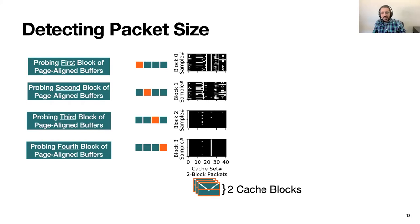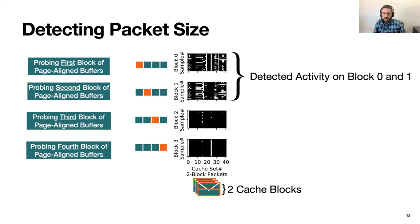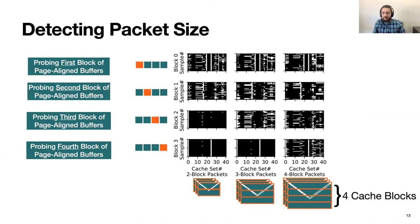It turns out we can. Similar to the first block of page-aligned buffers being mapped to only 256 sets, the second cache block of a page-aligned buffer can only map to another 256 sets, and we can deterministically find and monitor those as well. In these graphs, we constantly send packets of two cache blocks in size. We see that probing cache blocks corresponding to block zero and block one of all possibly page-aligned buffers records a lot of activity, but cache blocks two and three see almost none. We can confirm this by sending larger packets and seeing activity appear in blocks three and four.